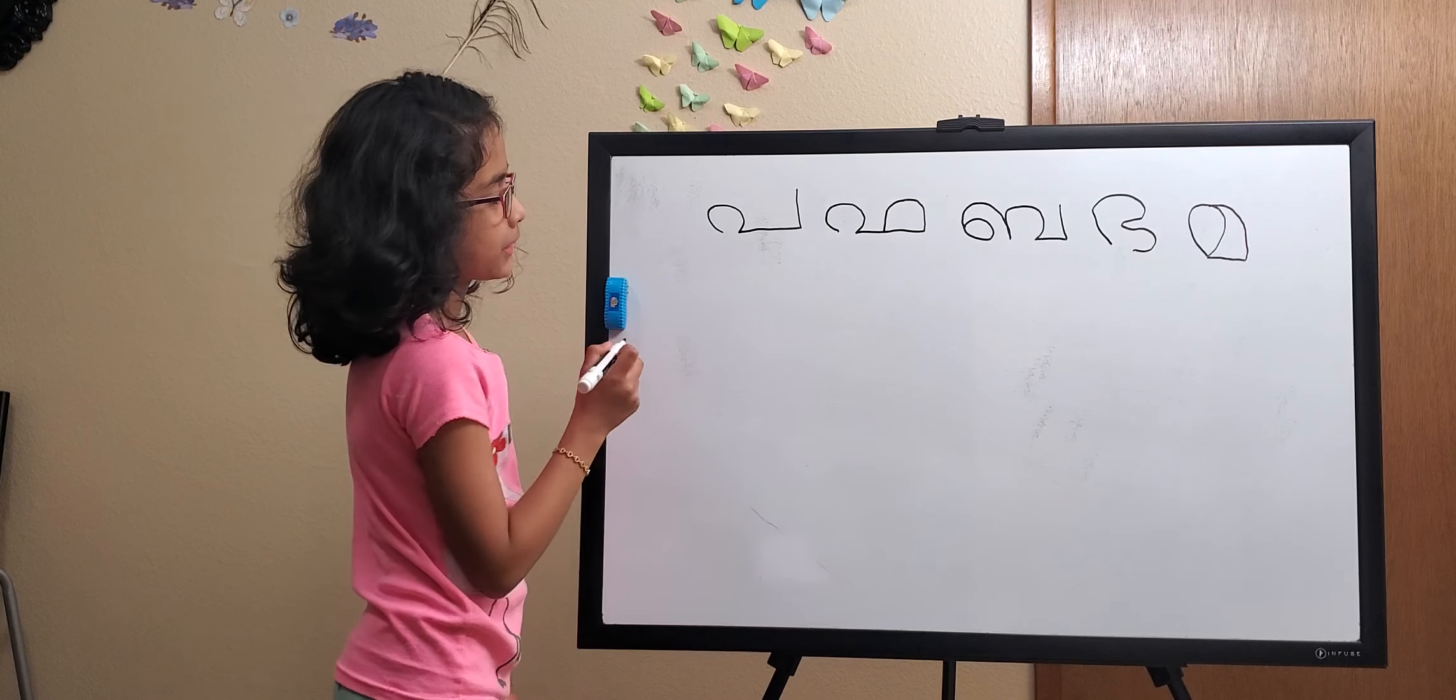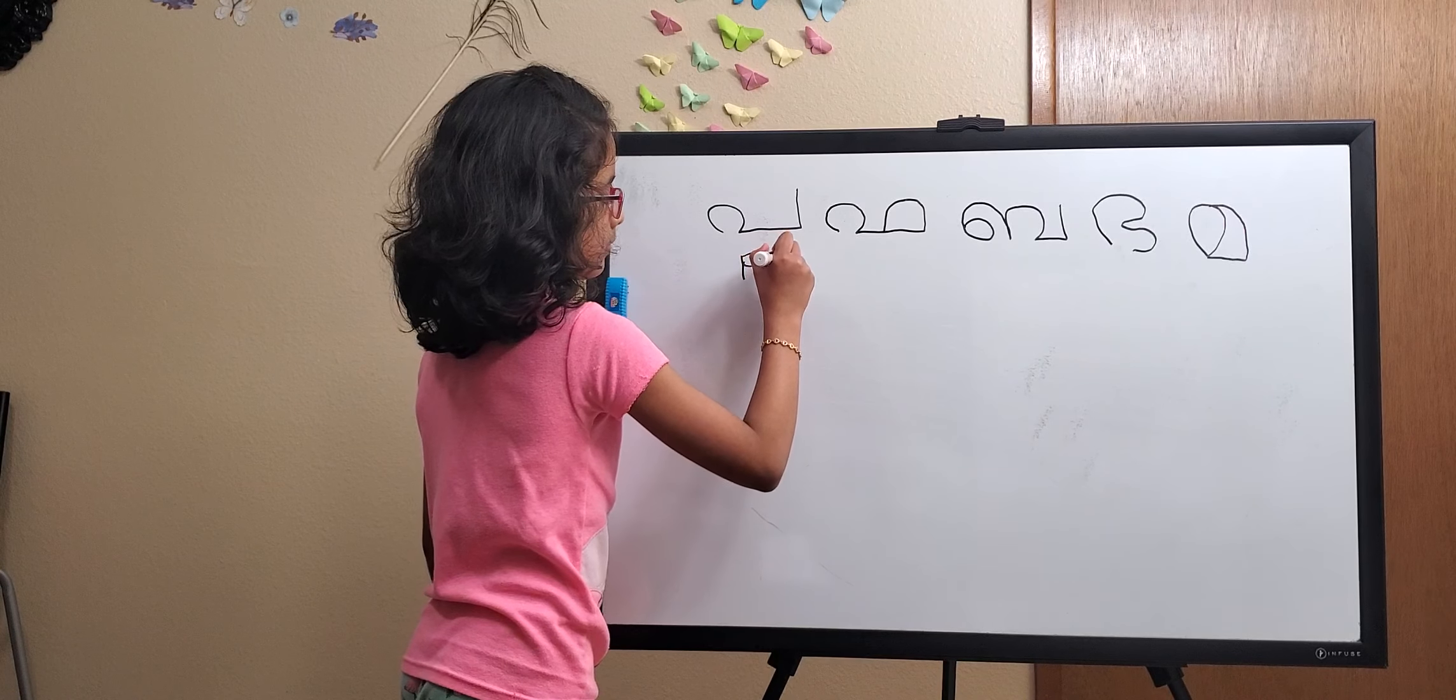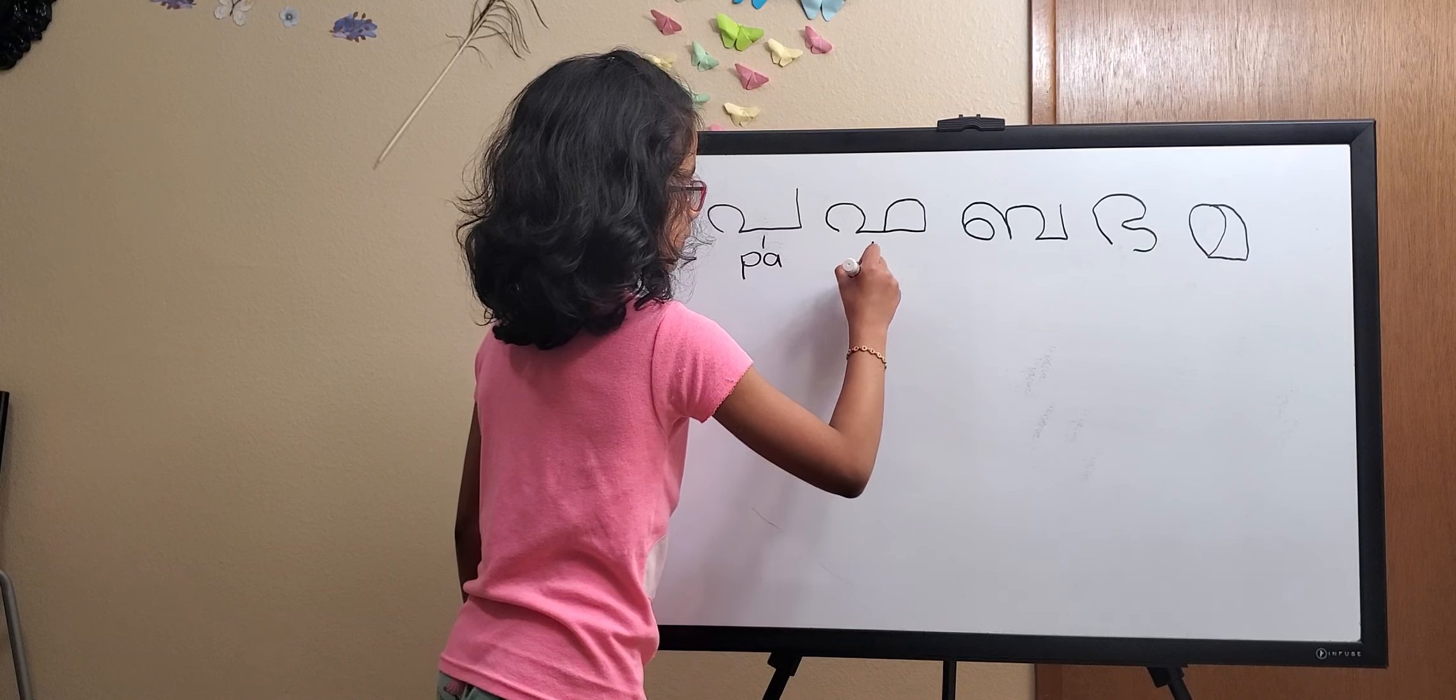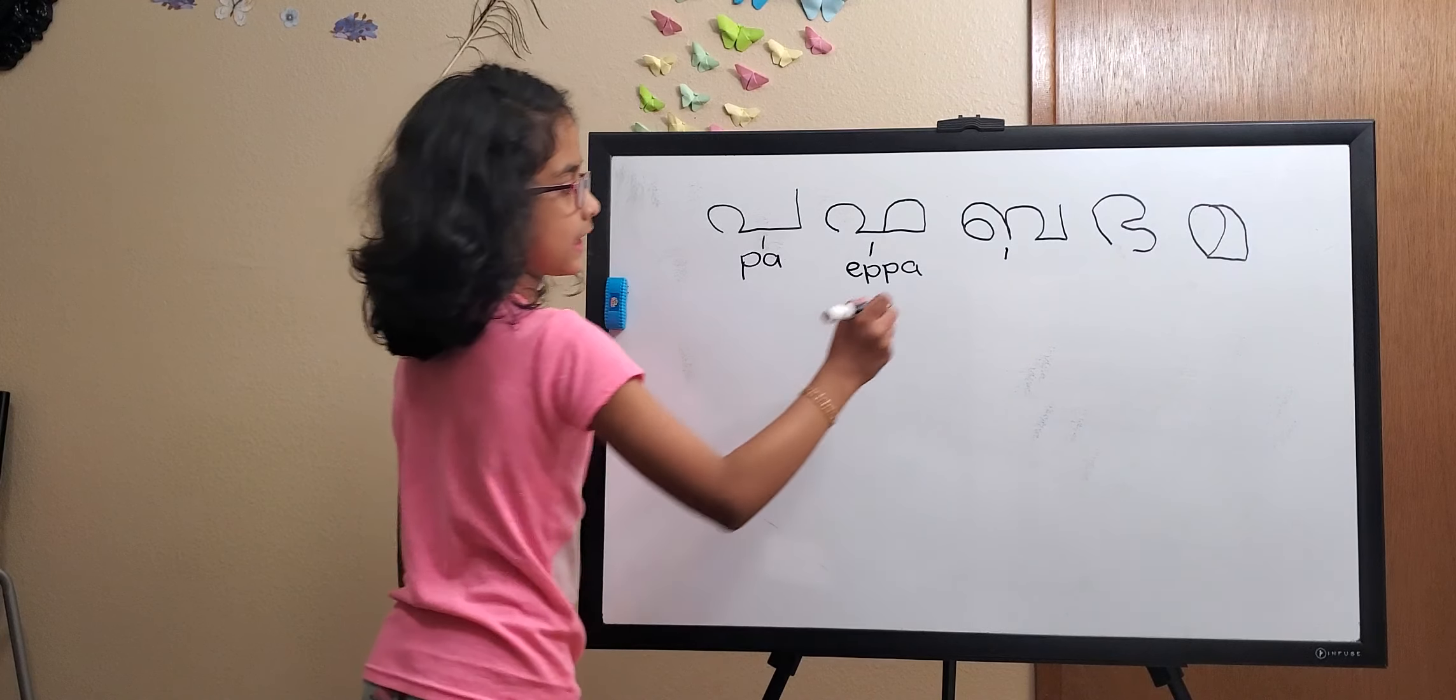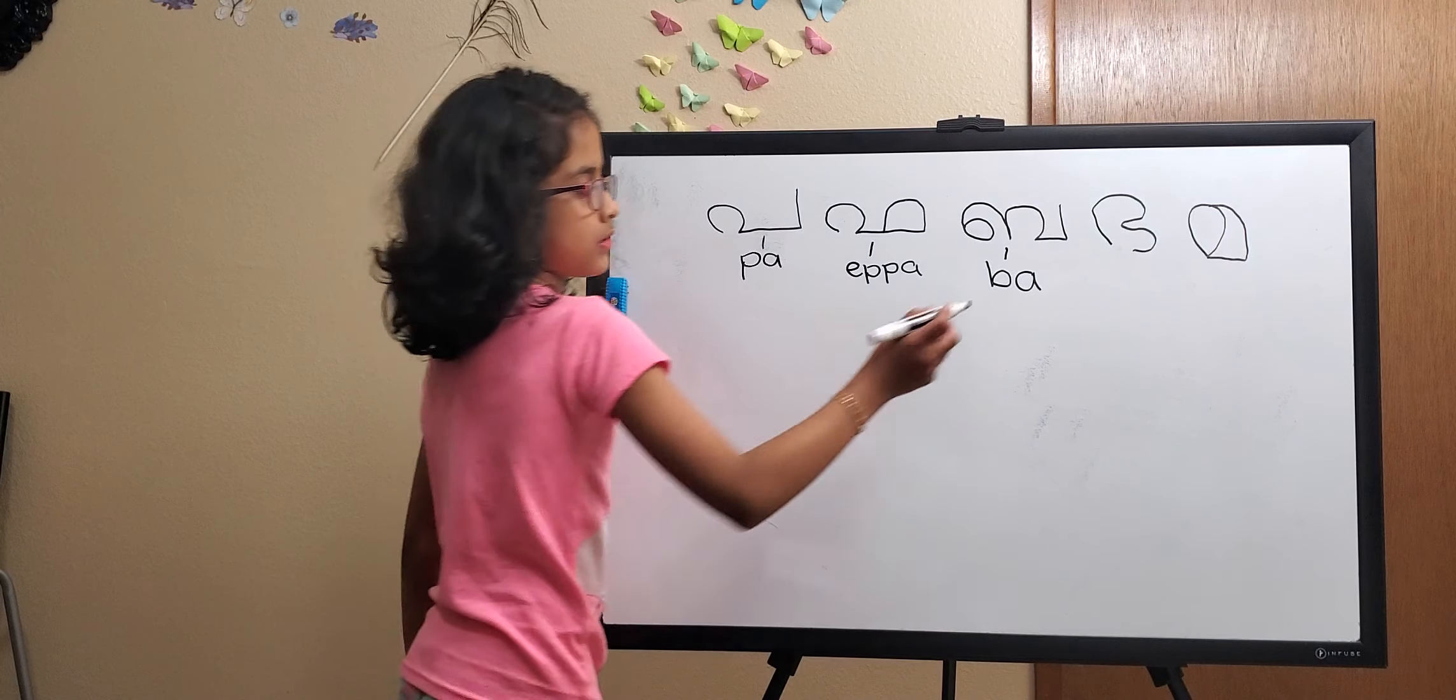So if we look at the way of pronouncing it, PA would be like PA. IBA would be like IBA. And MA, IBA.